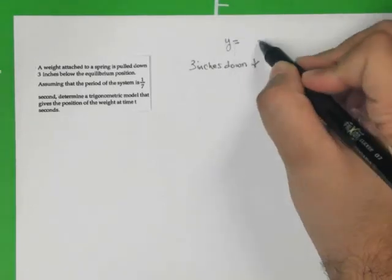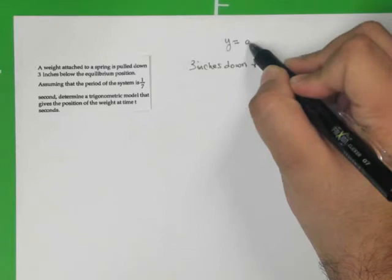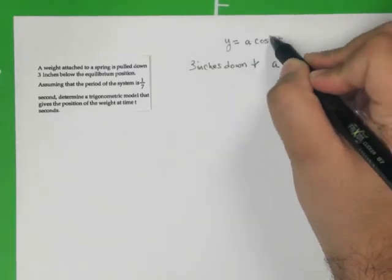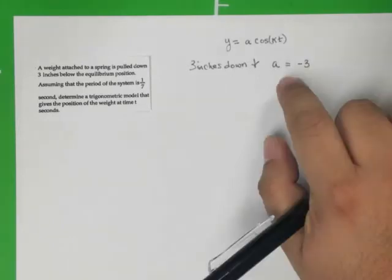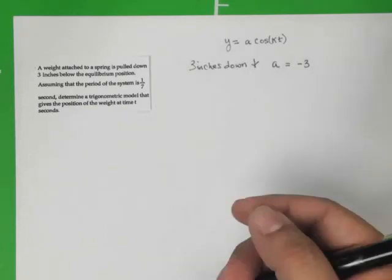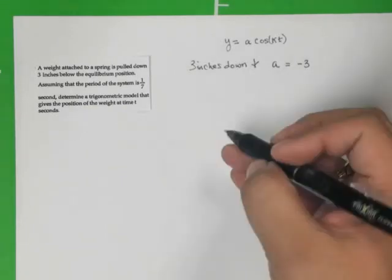And let's go ahead and use cosine. So let's recall y = a cosine of kt. We're going to use that. And what we're going to do is we're going to pluck this down three units.